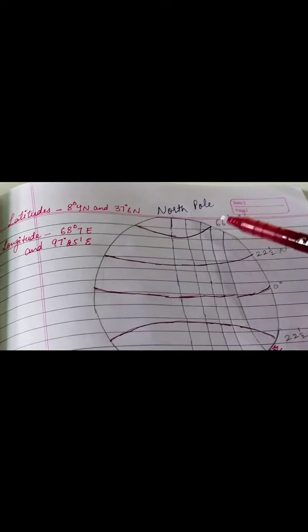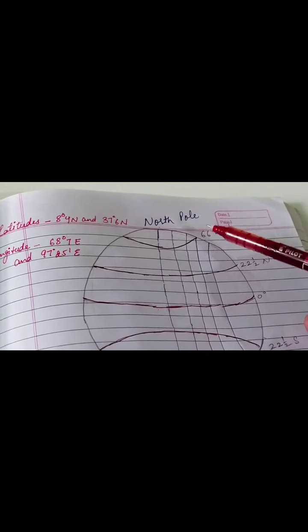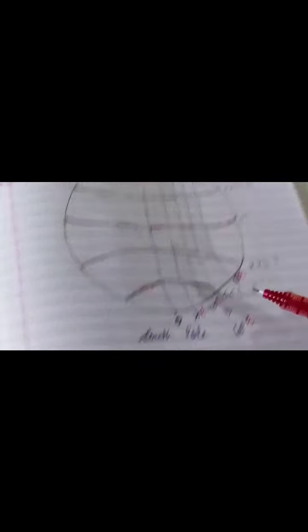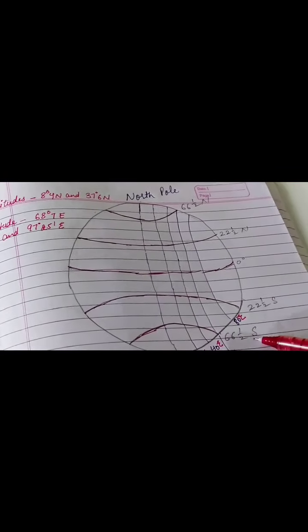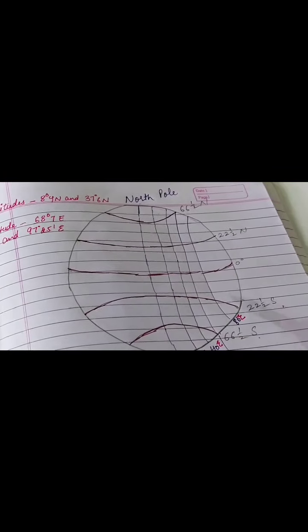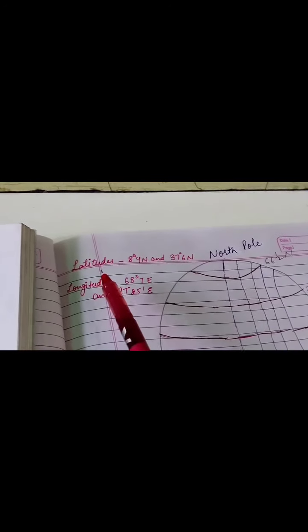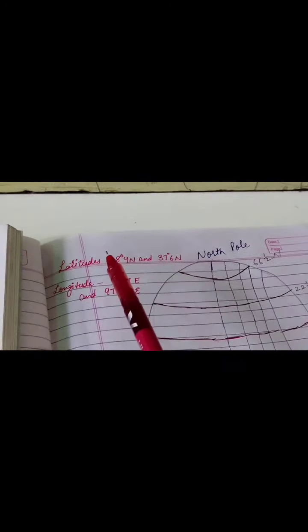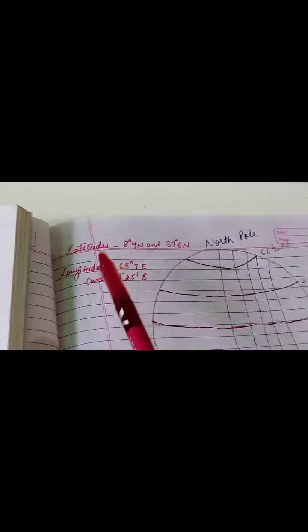The north pole is denoted with N, and the south pole and the area parallel to it is denoted with S. Then they have given us the extent of India — from which latitudinal line to which latitudinal line India is located.